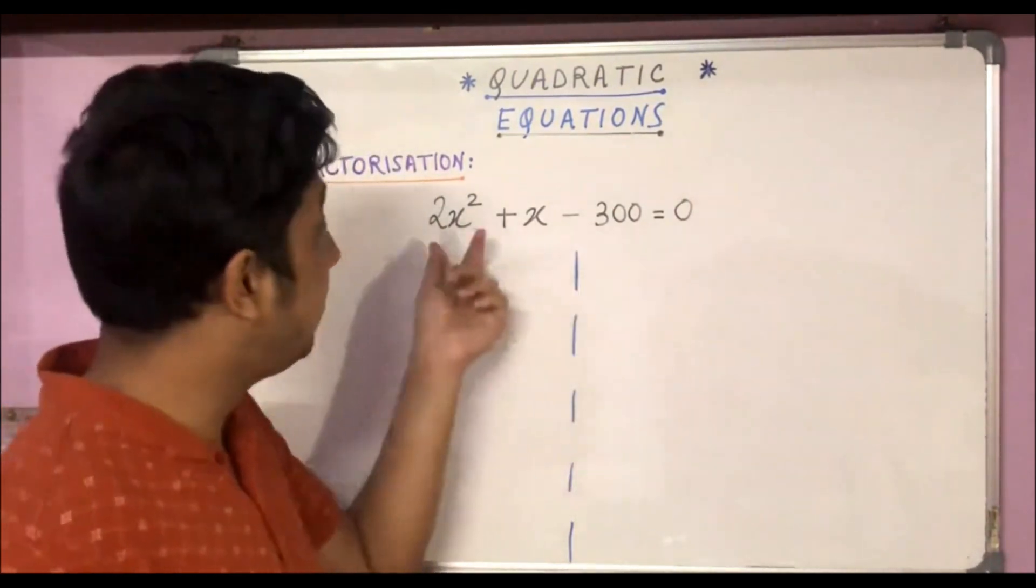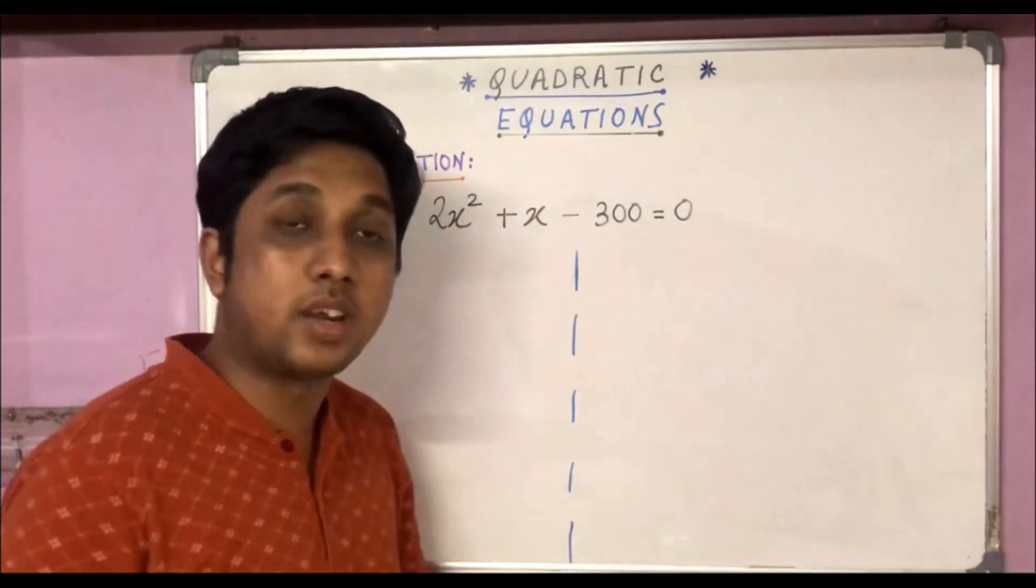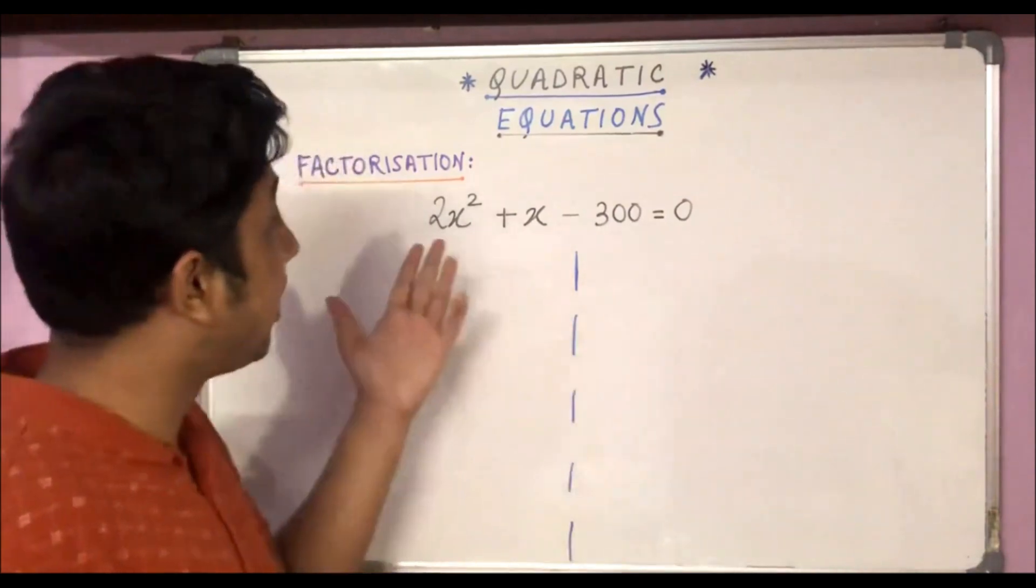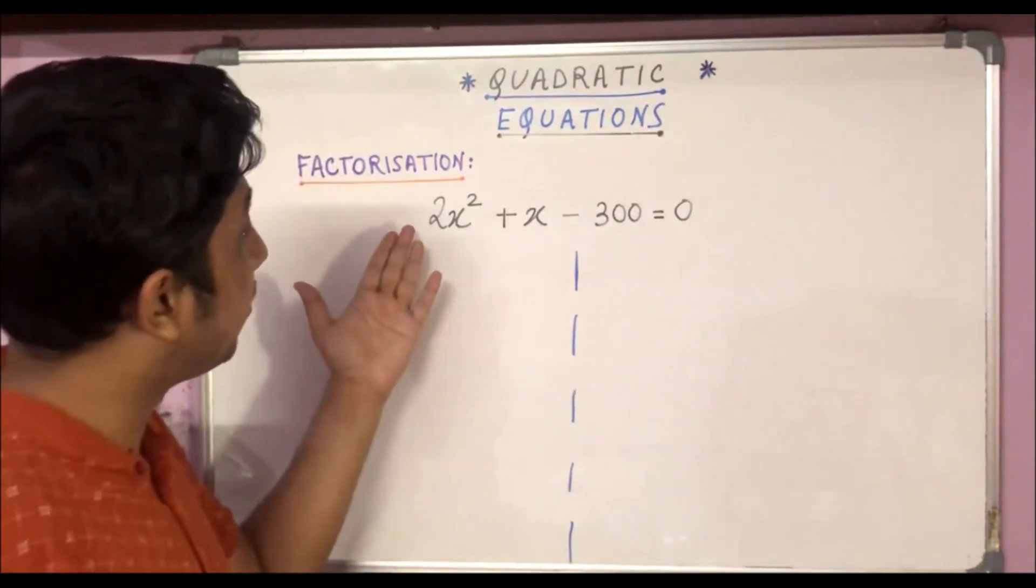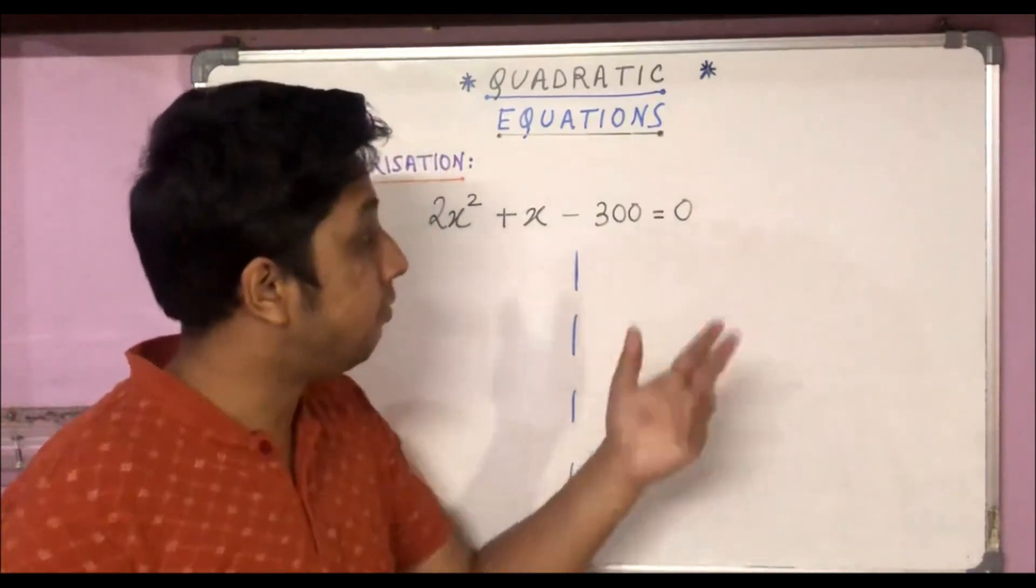Its value is very high and typically to solve by factorization using middle-term break, you have to multiply the coefficient of x², that is 2, by minus 300, and you would get minus 600.